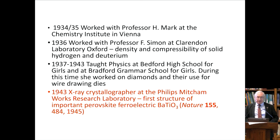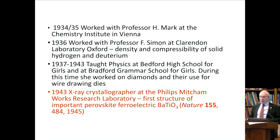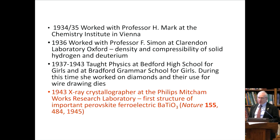In 1934–35, she moved to Vienna in Austria, where she worked with Herman Mark at the Chemistry Institute. She then came to Oxford, working with Professor Simon at the Clarendon Laboratory, measuring the density and compressibility of solid hydrogen and deuterine. She was already working on a number of different ideas.